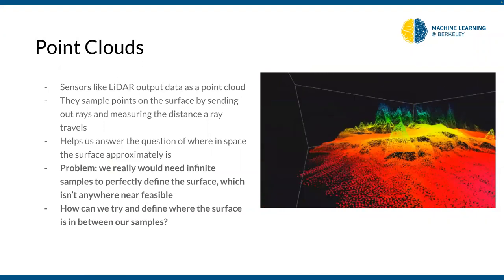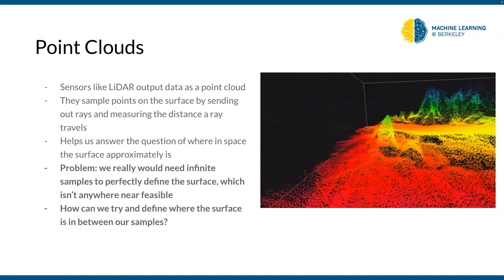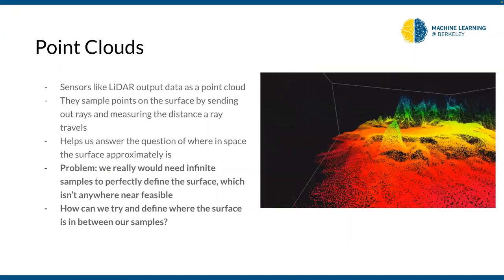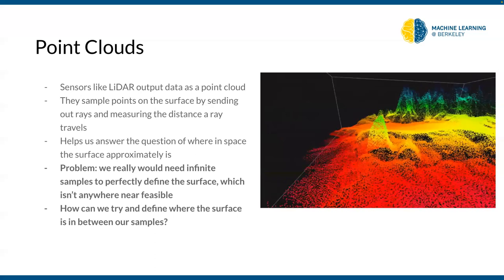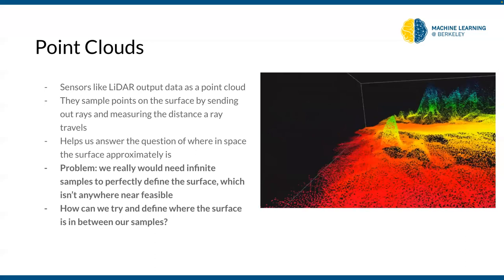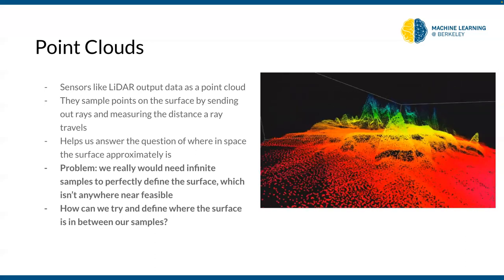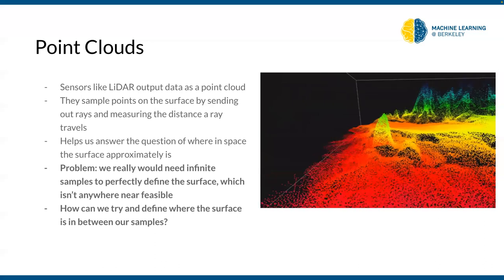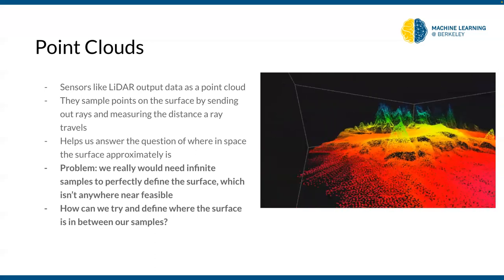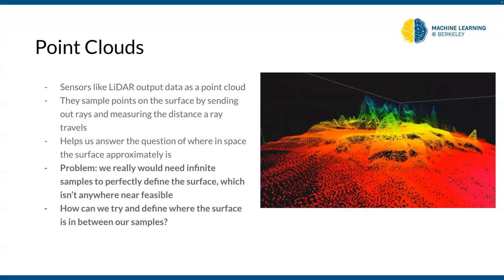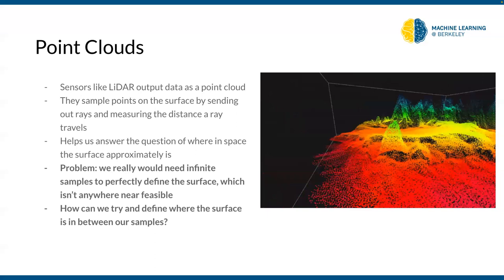Point clouds are cool. Sensors like LiDAR or radar output point clouds: they send out rays in all directions, measure the return distance, and knowing the direction and distance they can locate each point in 3D space. Combining all those samples reconstructs a point cloud. This gives a general idea of where surfaces are, but it's sparse — we don't know what's between the points. To reconstruct the surface we assume the point cloud is dense enough to linearly connect points and create a mesh.